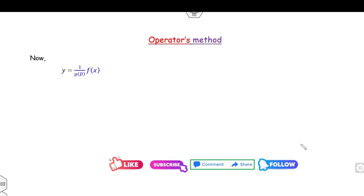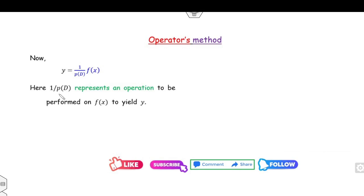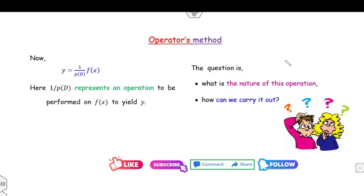Now here we have two important observations. The first is: what does 1 over P(D) mean? P is a polynomial, so it represents an operation you need to perform on f(x) to give you y. Two major questions arise: first, what is the nature of this operation — is it integration, differentiation, or partial derivative? And second, how can we carry it out?